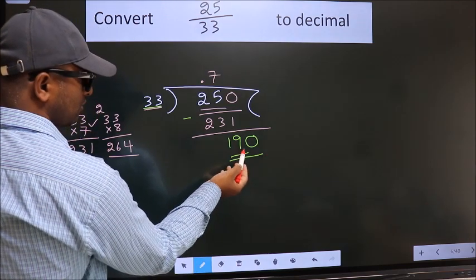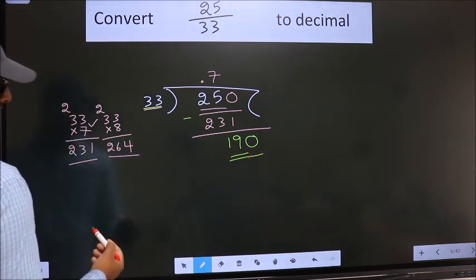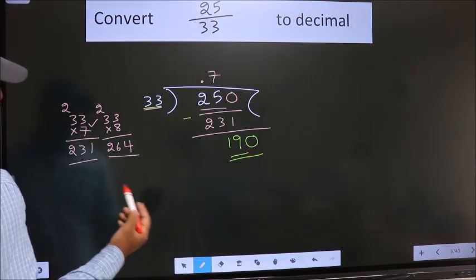A number close to 190 in the 33 table is, let us check with 5.